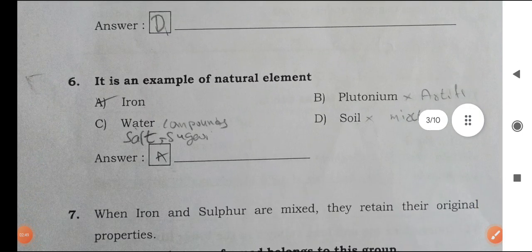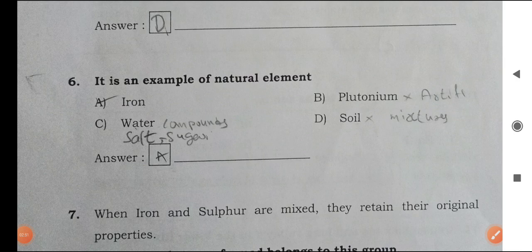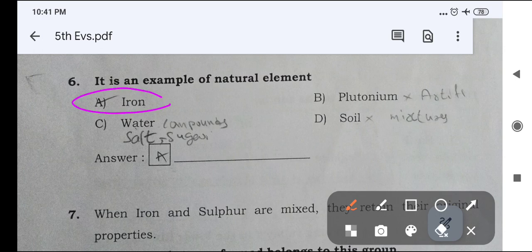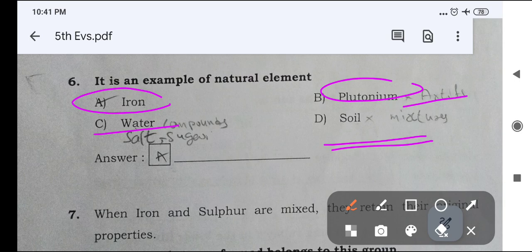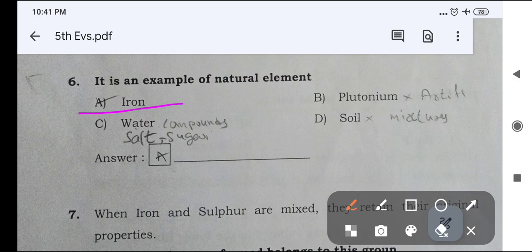Next one. It is an example of natural elements. Which is the natural elements? Iron is natural elements. Plutonium is artificial element. Water, salt and sugar are compounds. Soil is mixture. Here, plutonium is artificial elements, soil is mixture, water, salt and sugar are compounds. In this question, iron is right answer. It is an example of natural element.